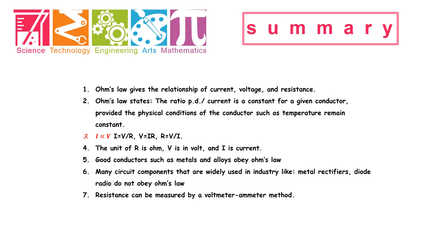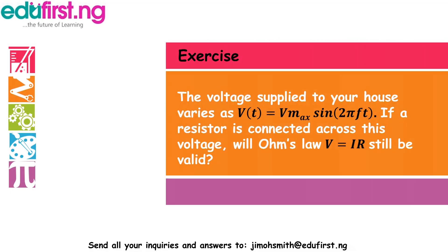In summary: Ohm's law gives the relationship between current, voltage, and resistance. The statement of Ohm's law: the ratio of potential difference divided by current is a constant for a given conductor, provided the physical conditions such as temperature remain constant. The formulae are: I = V / R for current; V = IR for voltage; R = V / I for resistance. The unit of R is ohms (Ω), V is in volts, and I is in amperes.